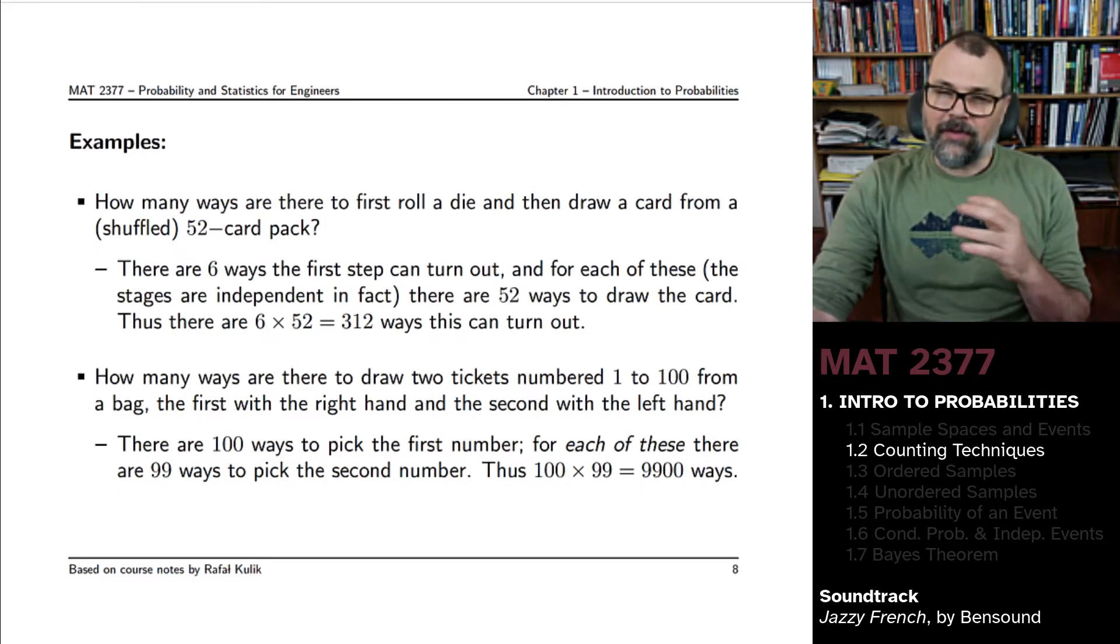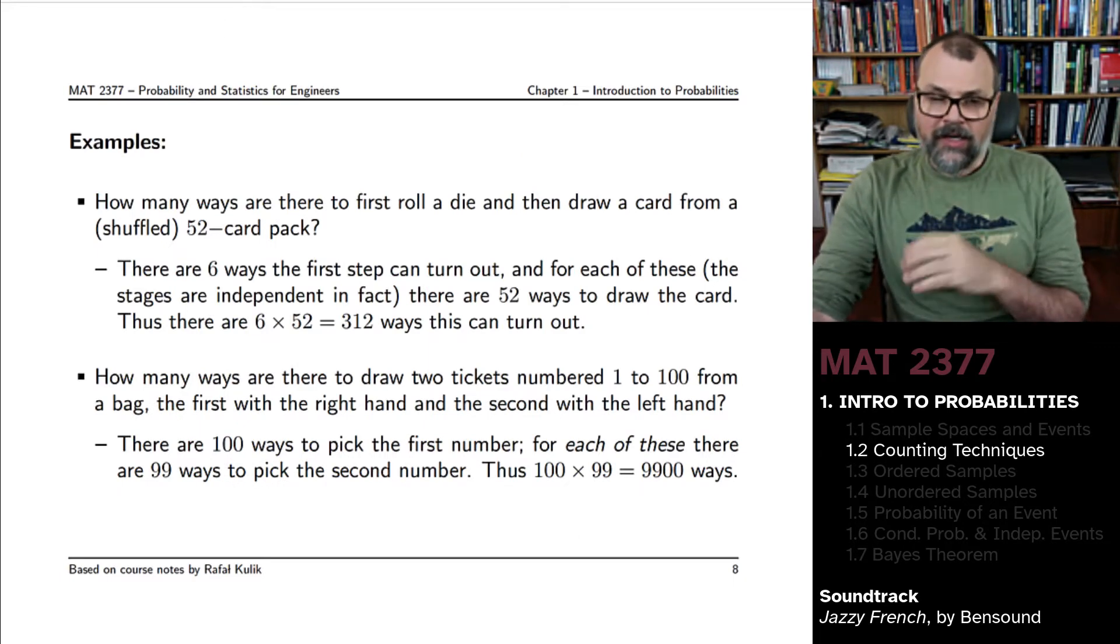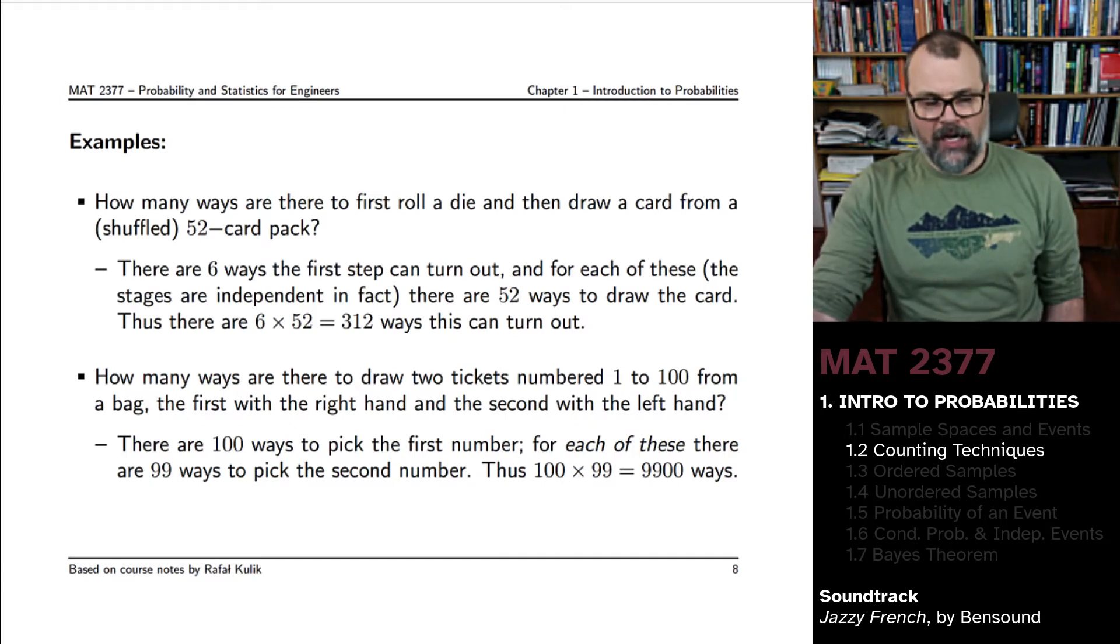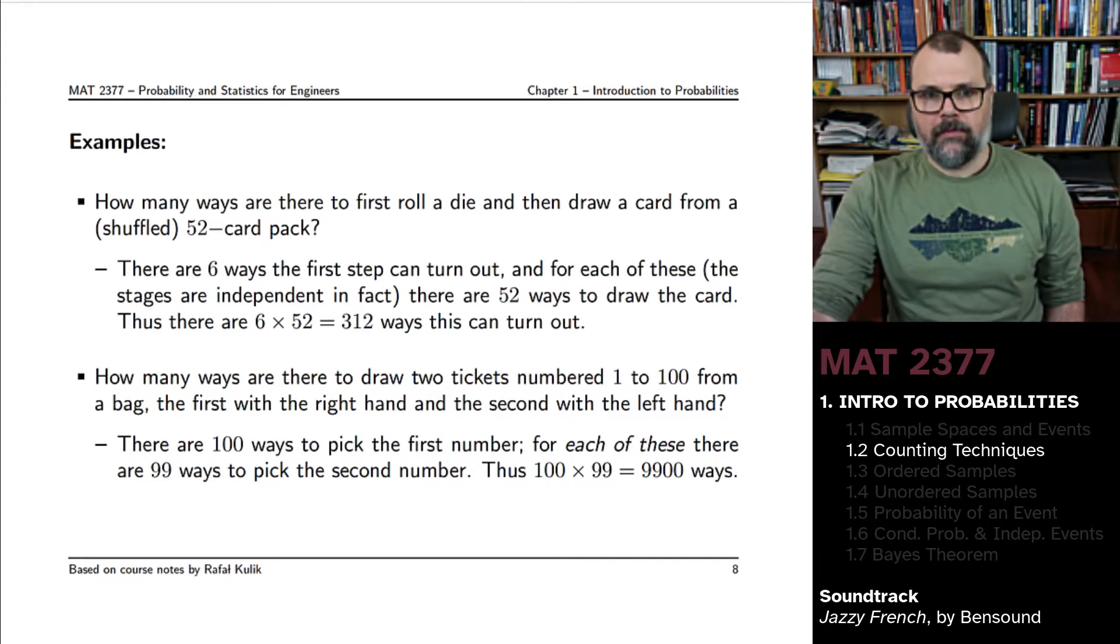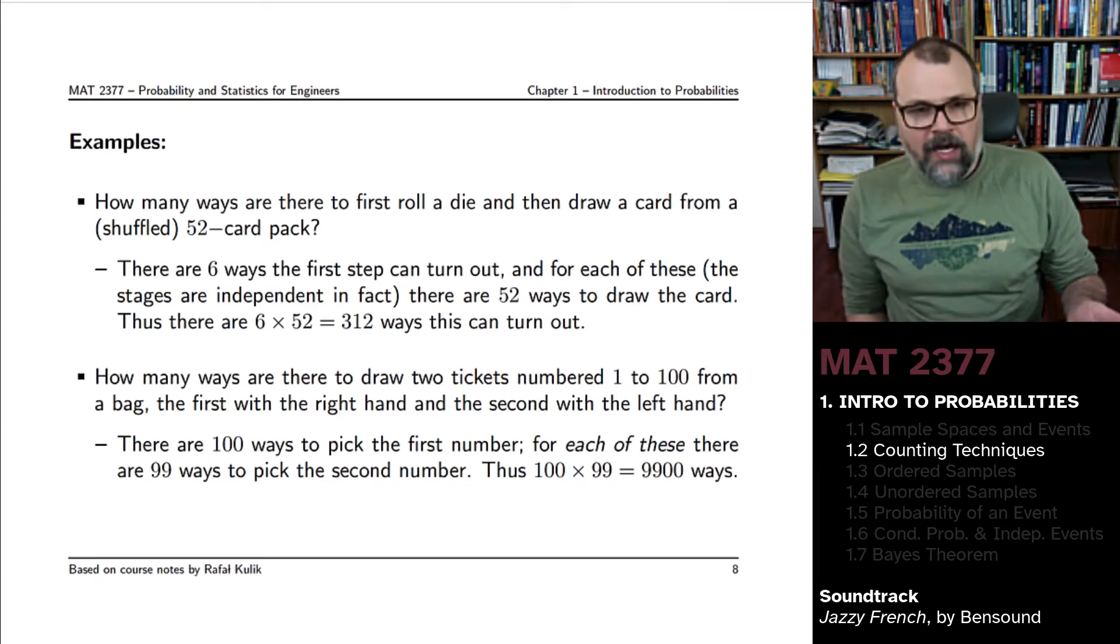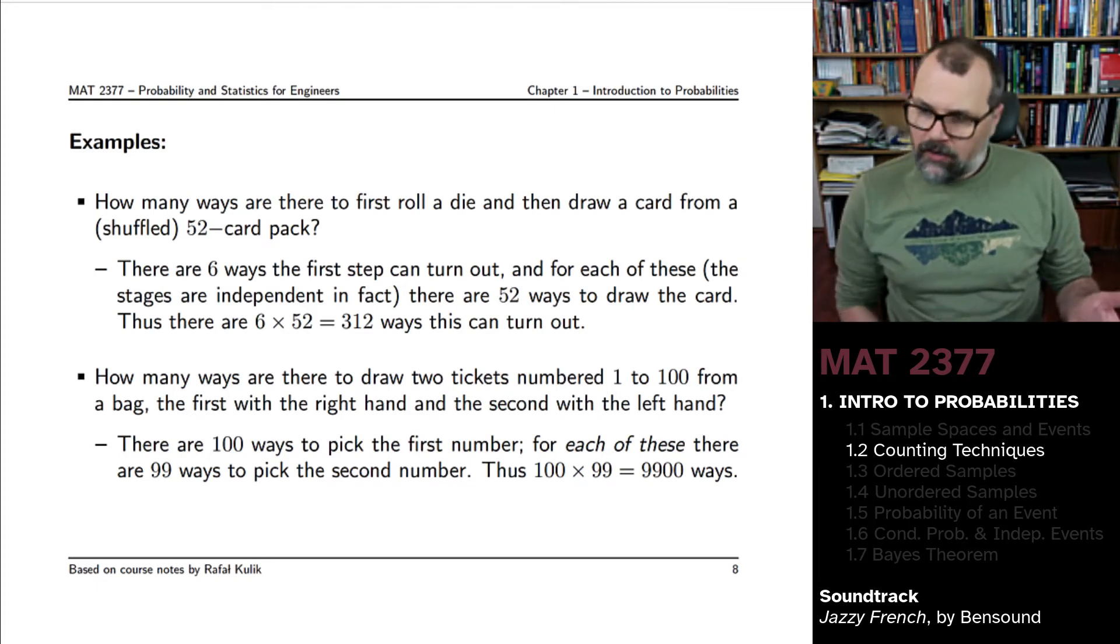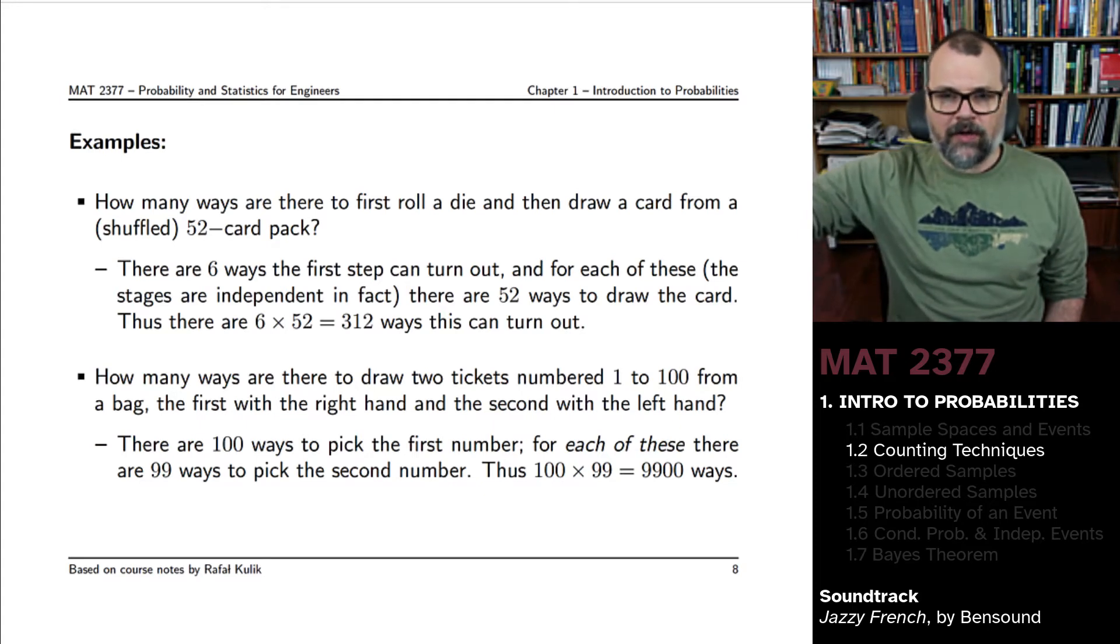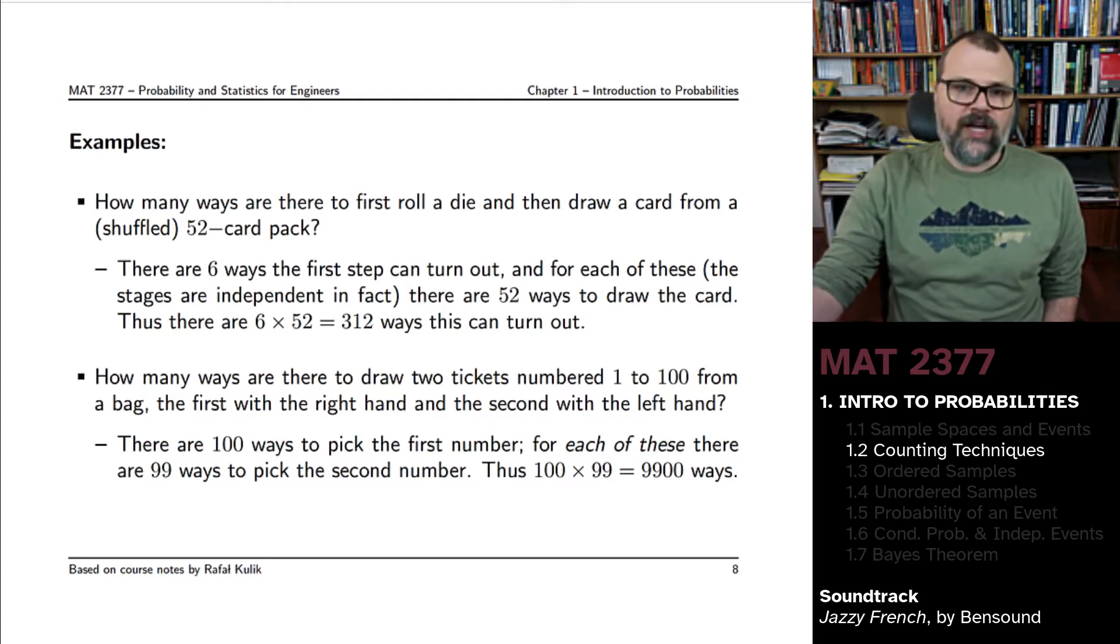Let's look at this in a more practical way. How many ways are there to first roll a die, and then to draw a card from a shuffled 52-card pack? Let's give you an example. You could first start, you roll the die, you get a 4, then you give me a 52-card pack and you're asking me to draw a card from it, and I get the jack of spades.